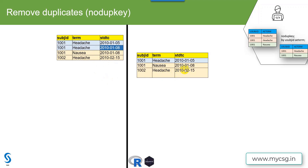So my output should look something like this: for subject 1001, headache occurred twice, and I want to keep only the first instance of it in the output data. Let's see how we do this in SAS.